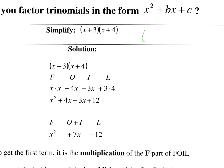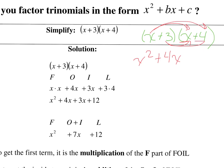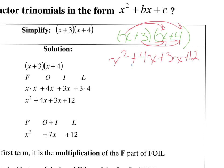When we multiply x plus 3 times x plus 4, we distribute this x to the binomial, giving us x squared plus 4x. Then we distribute the 3, giving us 3x plus 12. We combine like terms in the middle to get 7x, ending up with x squared plus 7x plus 12. Now that we're doing factoring, we're going to start with this finished trinomial and figure out what two binomials we can multiply to give us this trinomial.